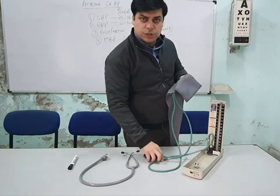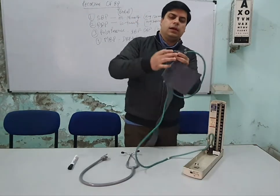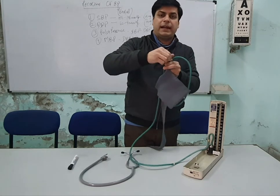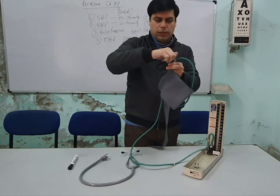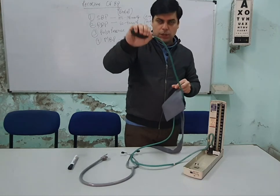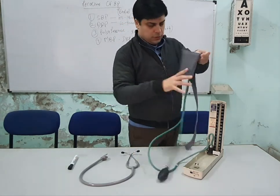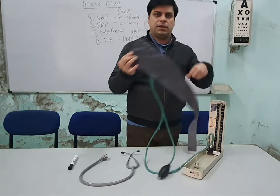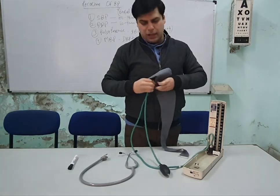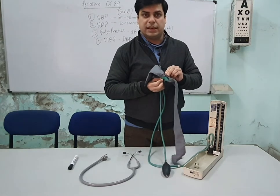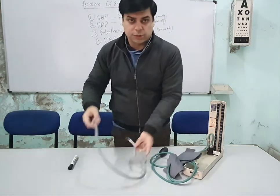Key components to note: there is a screw valve to inflate and deflate, a rubber bulb for inflation/deflation, rubber tubing, and the cloth covering the inflatable rubber bag inside. There is also a stethoscope used alongside the sphygmomanometer.